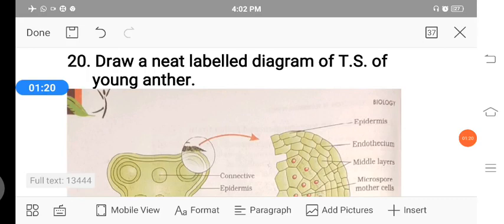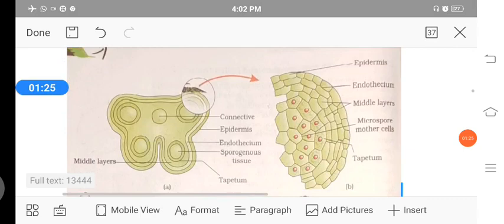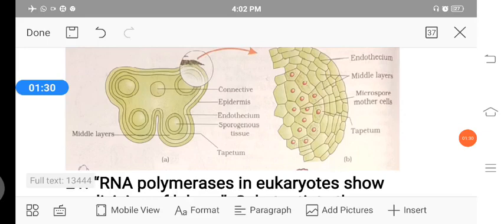Draw a neat labeled diagram of TS of young anther. You are going to draw this diagram. Both one is enlarged part, another is the complete diagram. You have to write at least 6 labelings, then you are going to get the 3 marks.